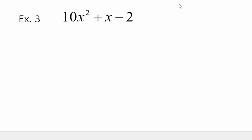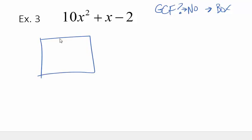In example 3, first I need to check is there a greatest common factor? No. So I can go directly to my box method. I have my box. 10x squared and a negative 2.